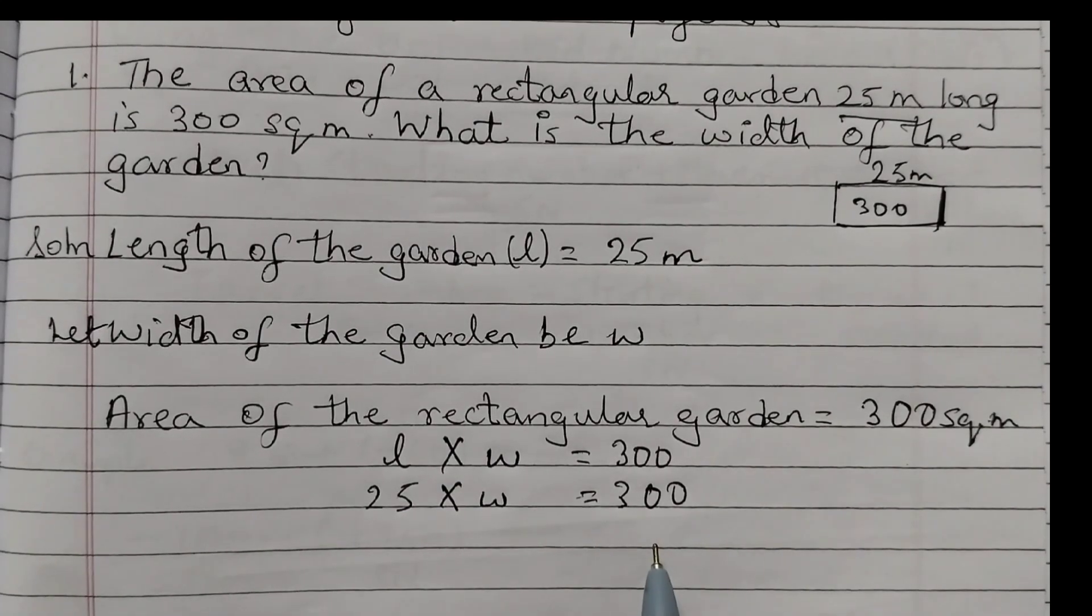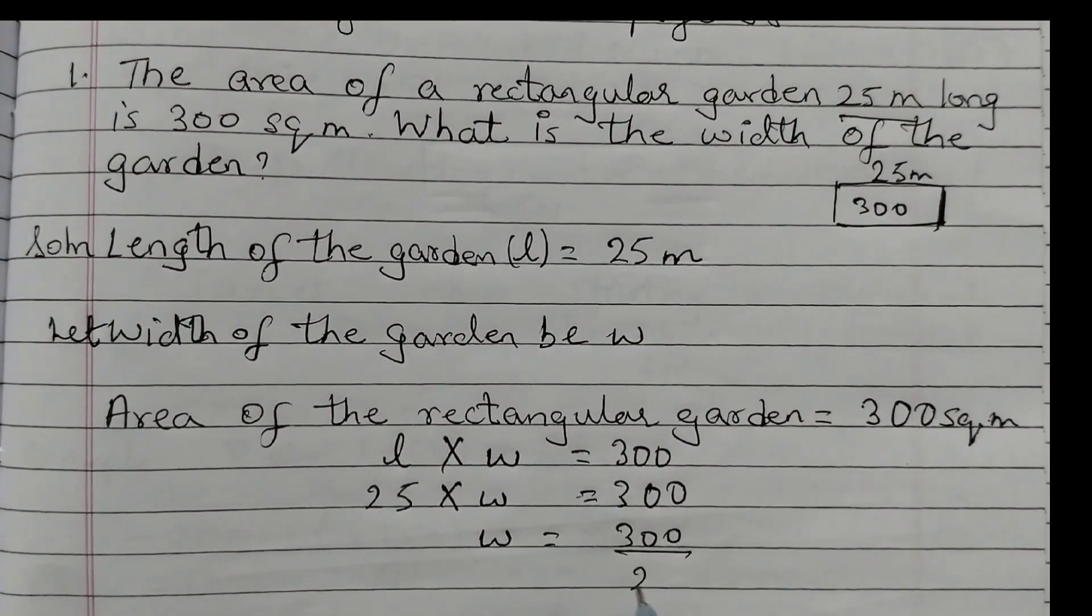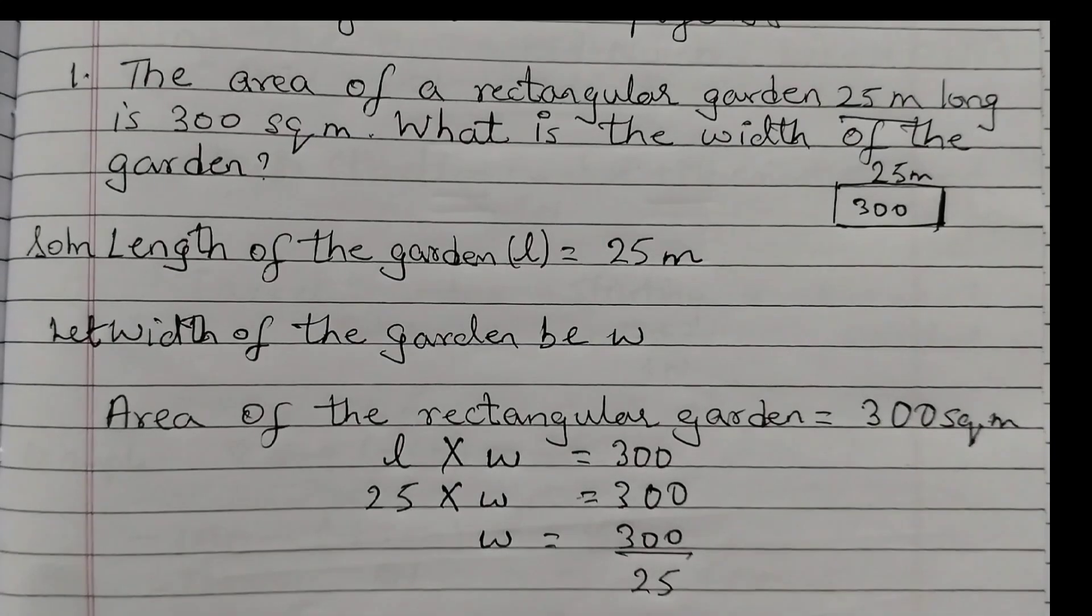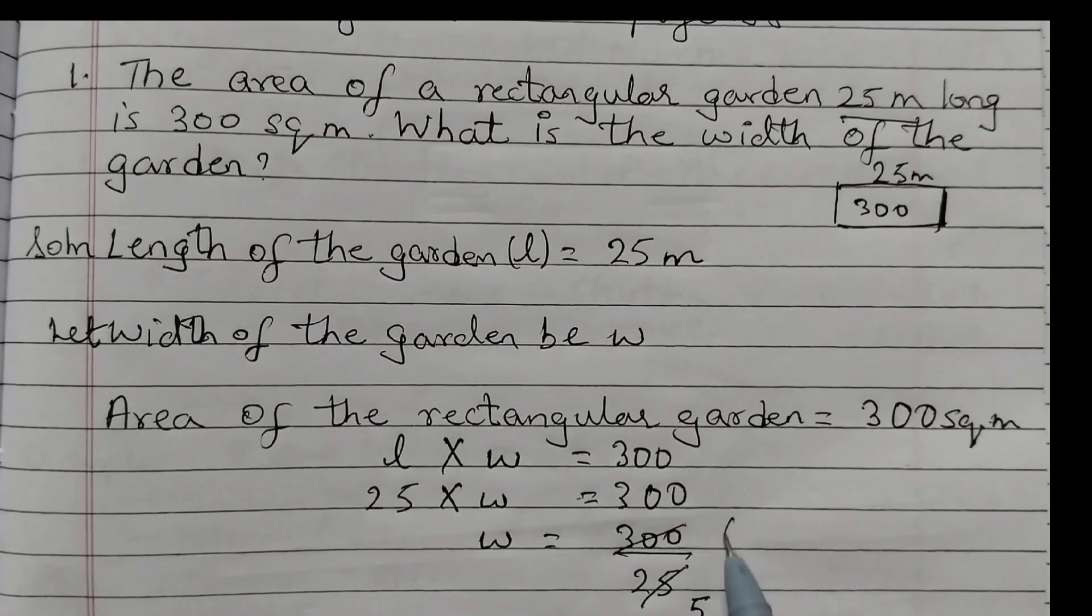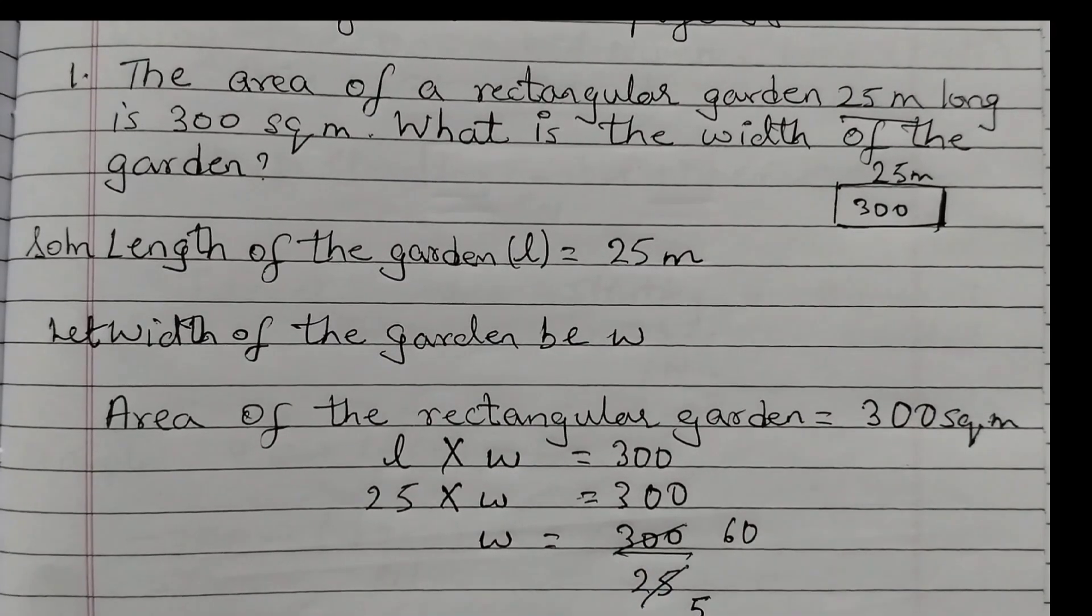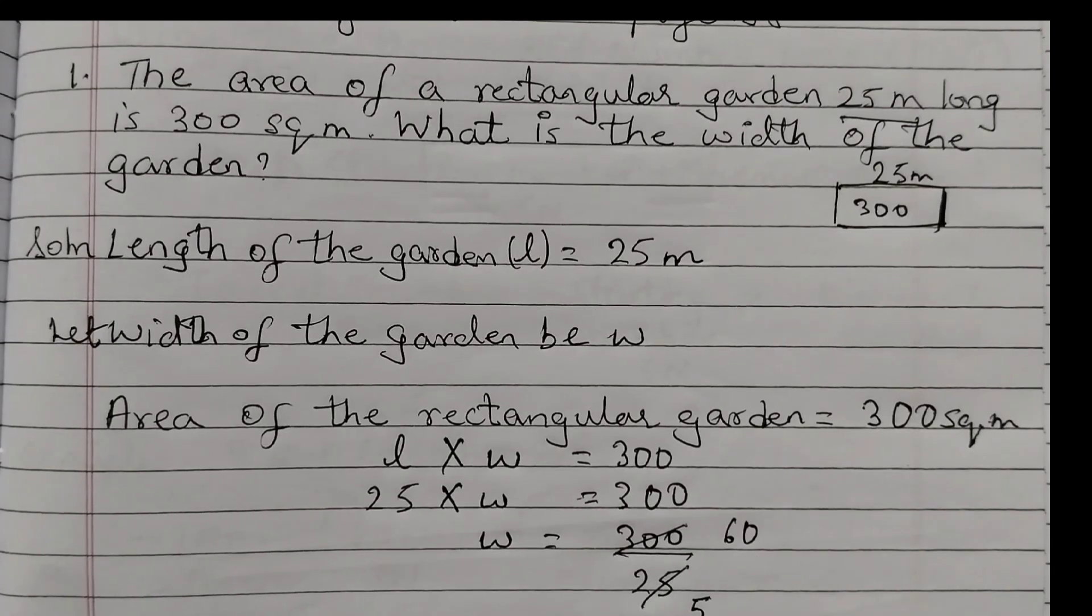That means we are going to divide by 25, so W, the width, is equal to 300 divided by 25. Now we will do the cancellation: 5 fives are 25, 5 sixes are 30, and then 0. 60 divided by 5, now again this will go by 5. 5 ones are 5, and here 5 ones are 5 and 10, 5 twos are 10.